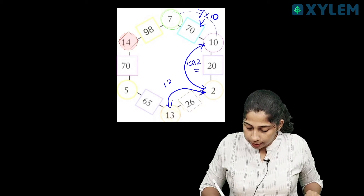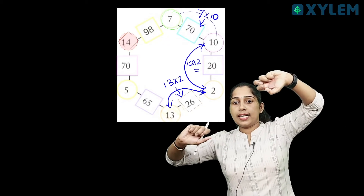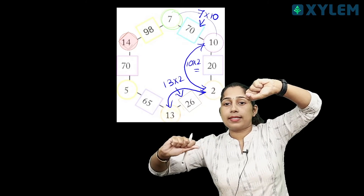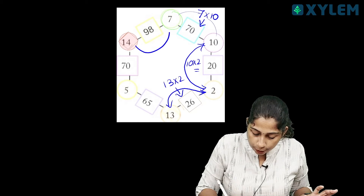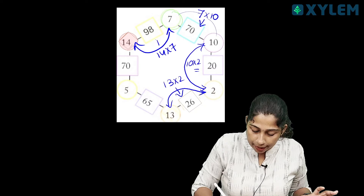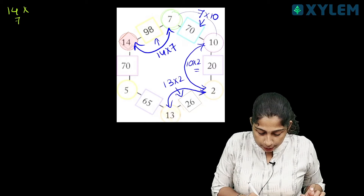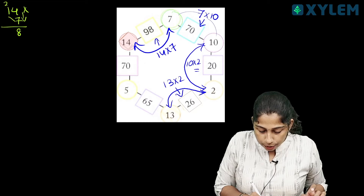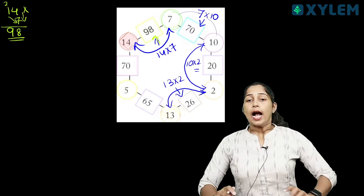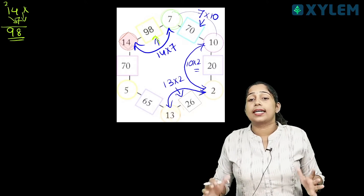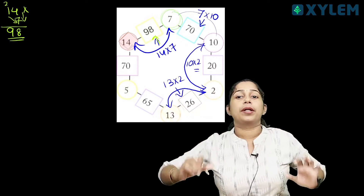If you choose 13 × 2 × 6, you can choose 26. That is the correct number. If you multiply the numbers in two circles, you can multiply the numbers. If you choose 14 × 7, that is 98. 4 × 7 is 28, balance 2. 1 × 7 is 7, 7 plus 2 is 9. So 98. If you choose the numbers in two circles, you multiply the number in the middle. That is the magic.